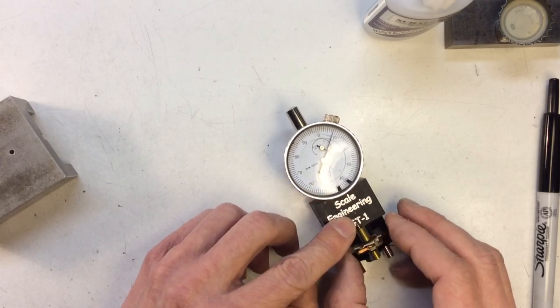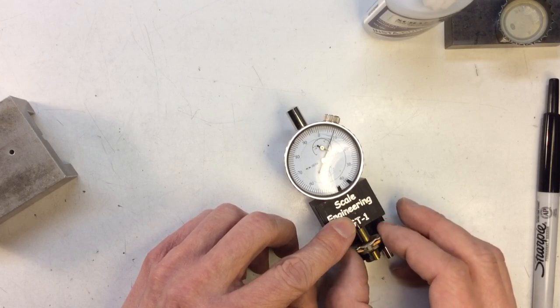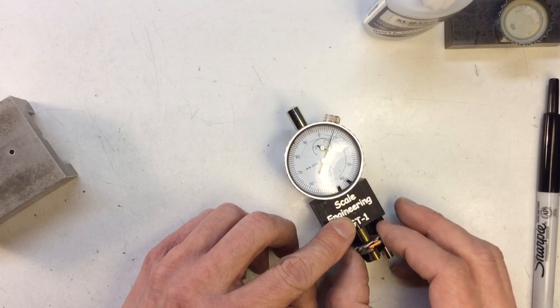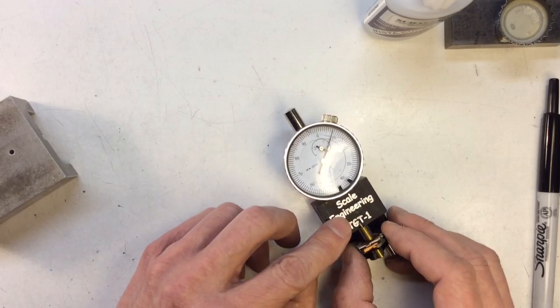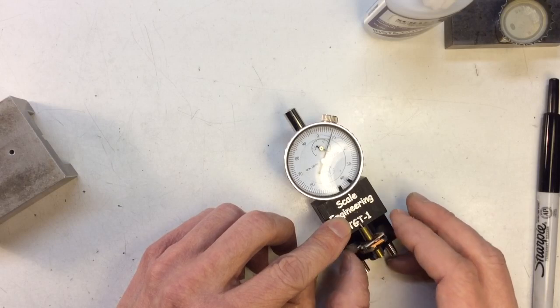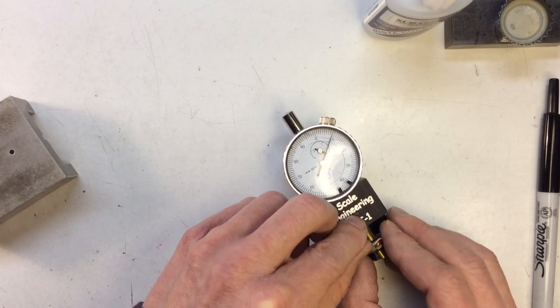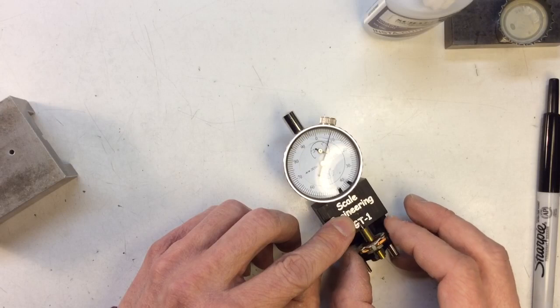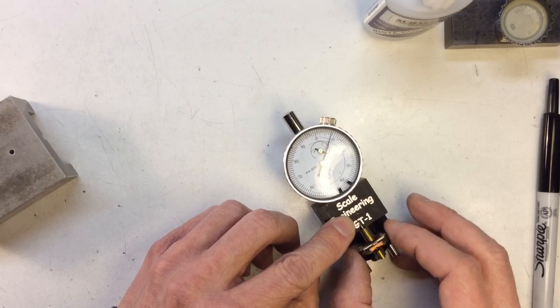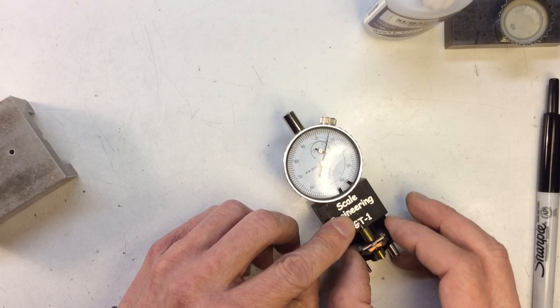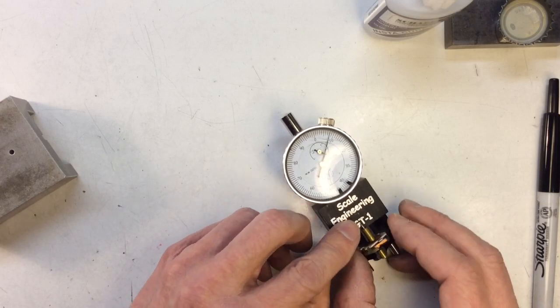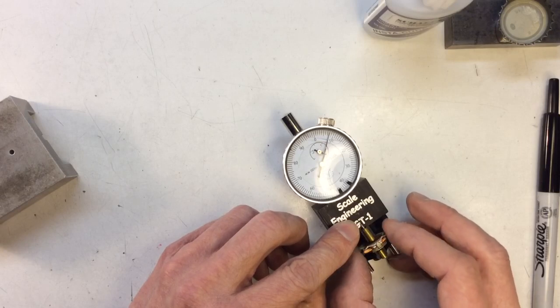Now the low spot is right about on this solder tab, so I'm just going to push very gently now. A little more than a thou still. I'm going to push this one up just a little. I think that's probably going to do it. Looks like it's under a thou.